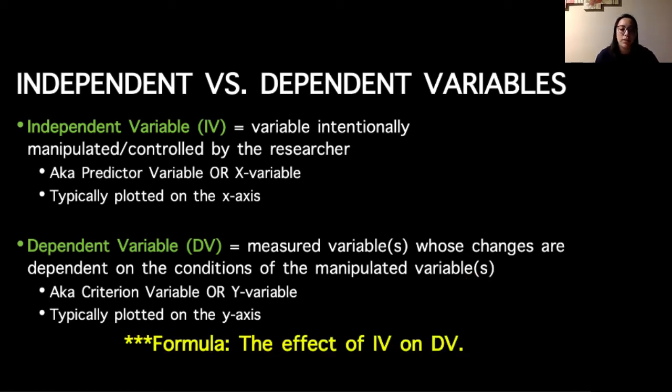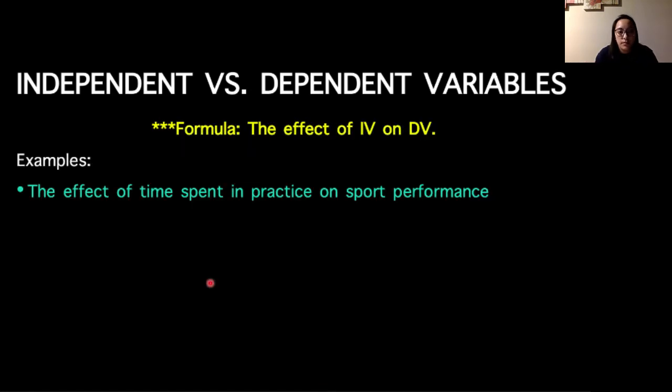Usually when we're looking at cause and effect relationships, we have a formulated phrase where we look at the effect of the manipulated independent variable on the measured dependent variable. I have an example in here. If we wanted to look at the effect of time spent in practice on sport performance, using this formula, the effect of time spent in practice would be our independent variable, and sport performance would be our dependent variable. Time spent in practice is what we control.